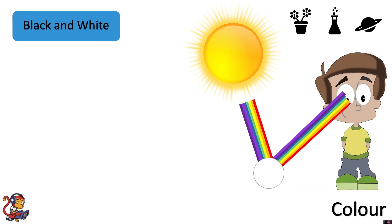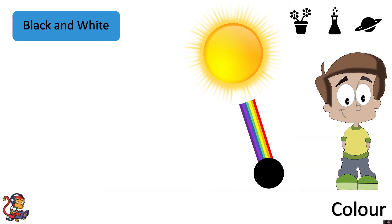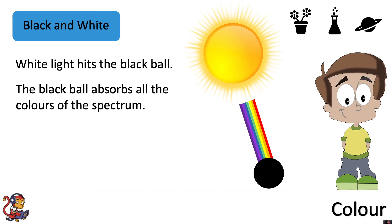Now let's think about how we see black and white. For a white ball, white light hits the white ball and the white ball reflects all the colours of the spectrum. For a black ball, white light hits the black ball but the black ball absorbs all of the colours of the spectrum, so you perceive that as black.